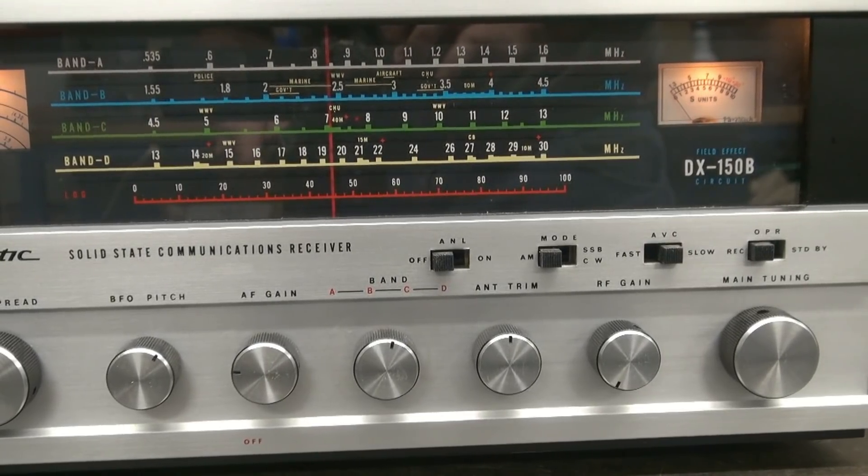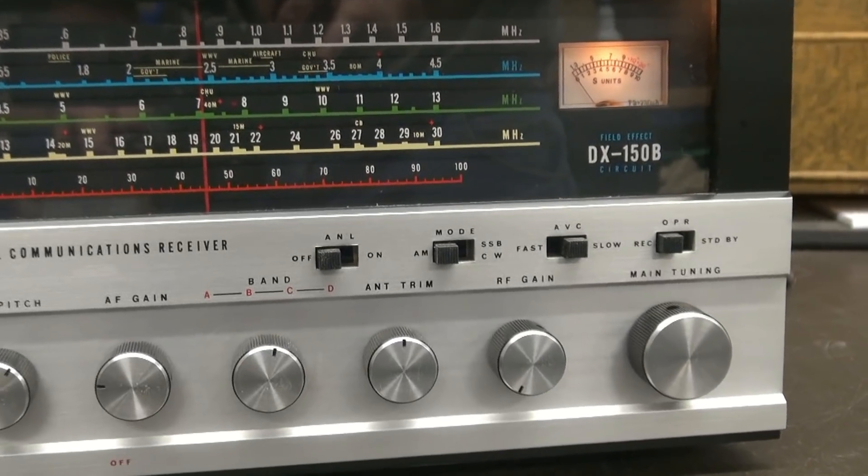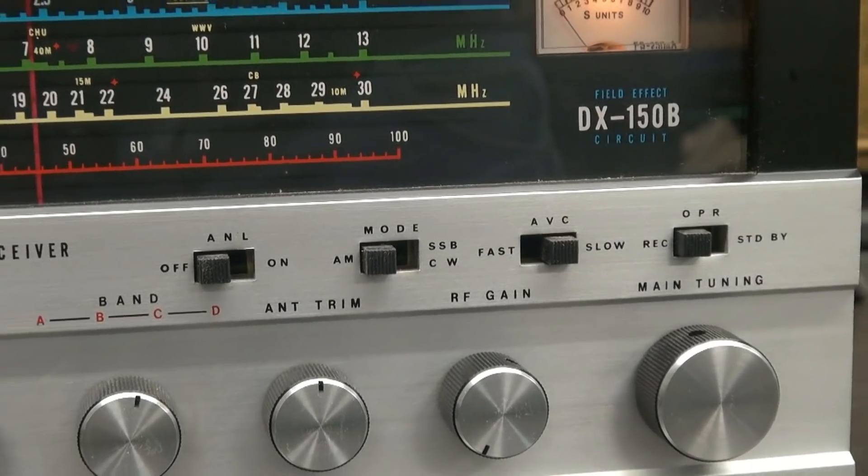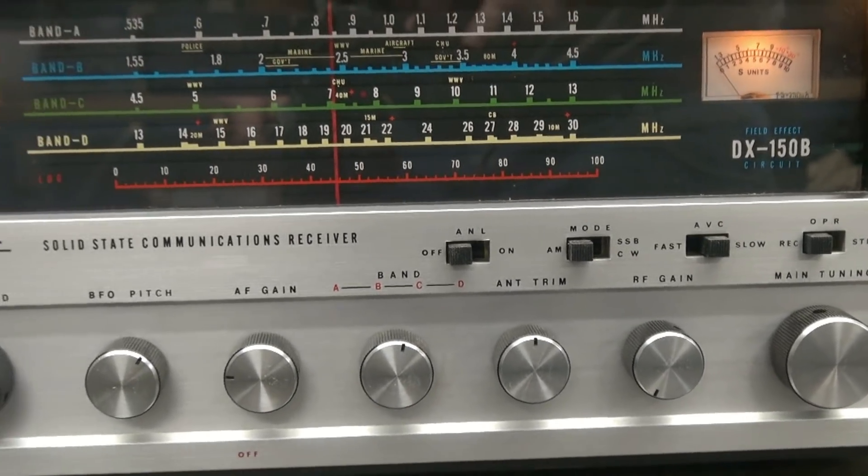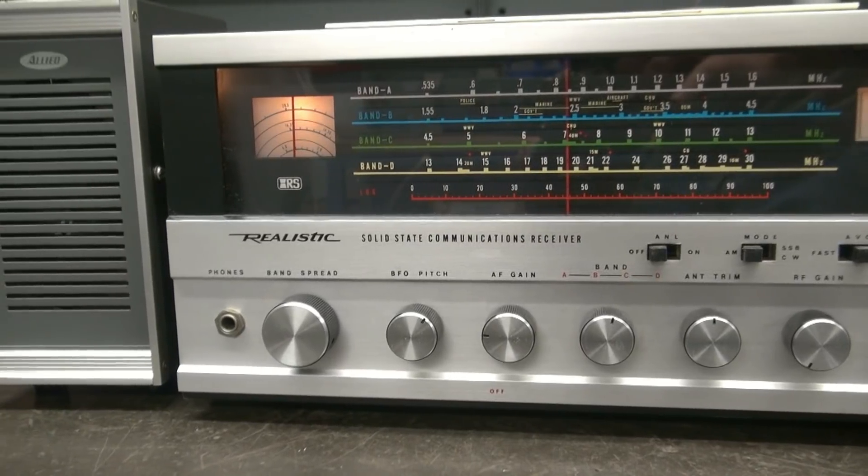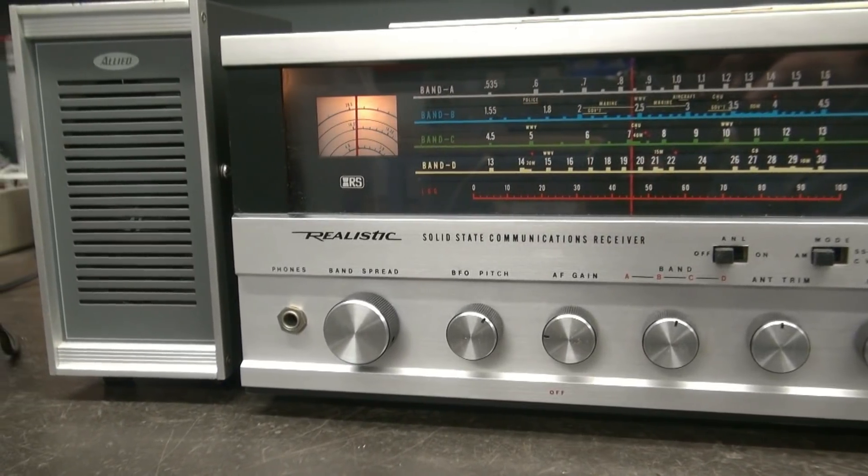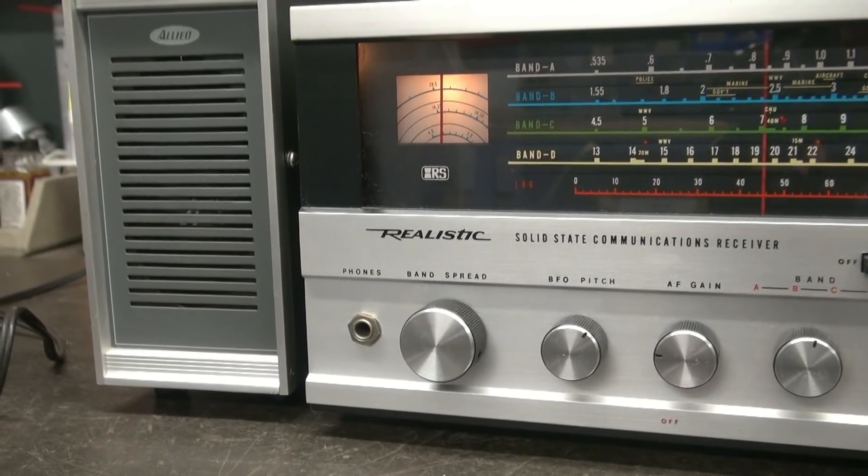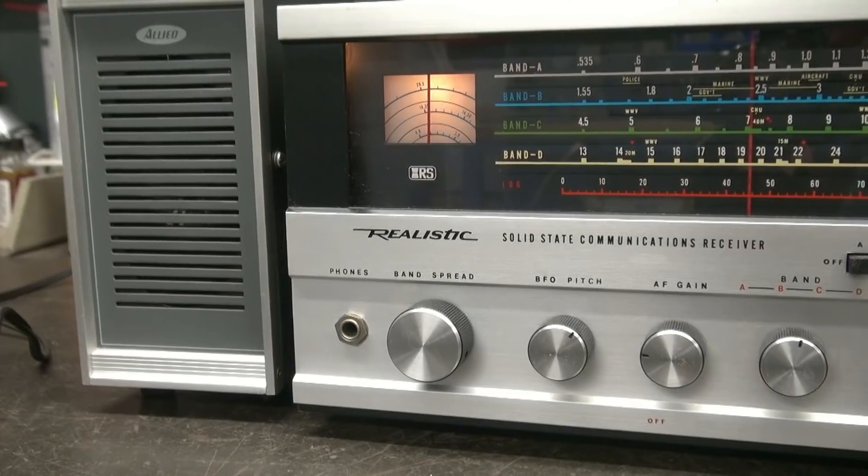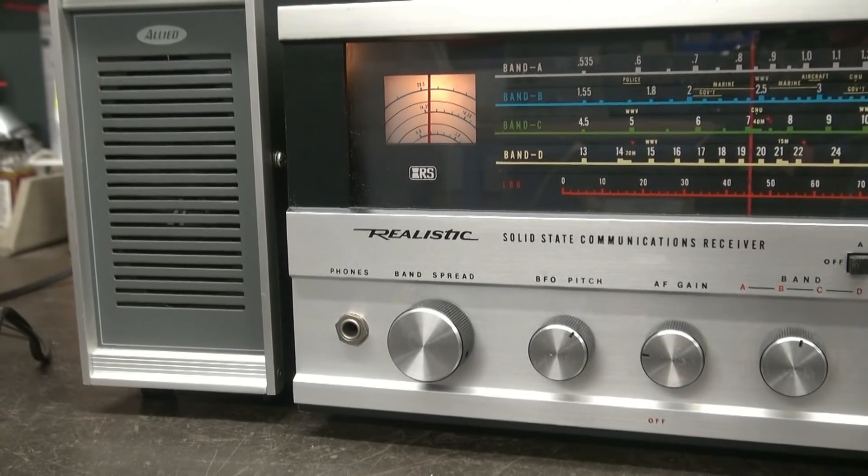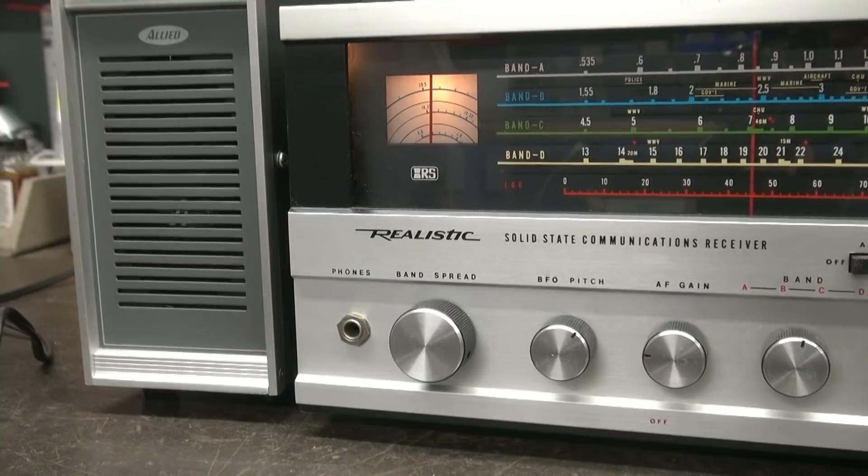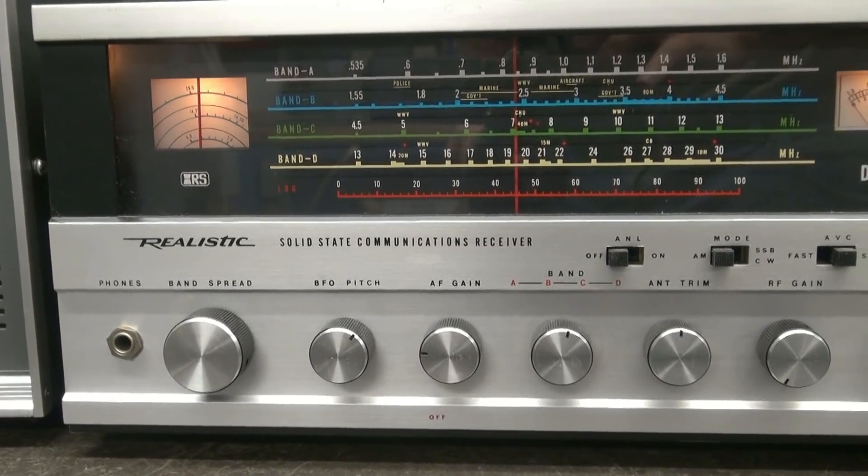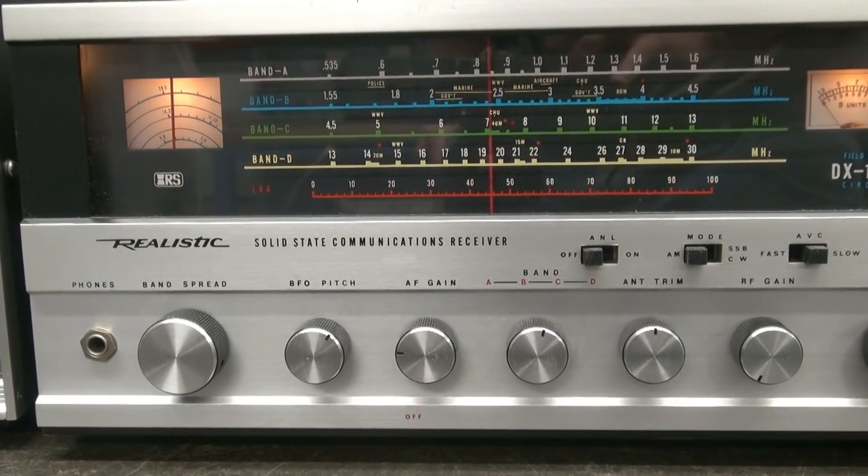So here she is, the Super Elemento Realistic DX150B shortwave receiver. Built back in the mid 70s I believe. These are a very nice receiver with a beautiful aluminum panel and an external speaker. Now you can see the speaker I have is not the realistic one. It's actually made by Allied, but it's actually the same as the SP150 offered by Radio Shack for this receiver. So now let's go to what the problems are of the receiver and how to resolve them.